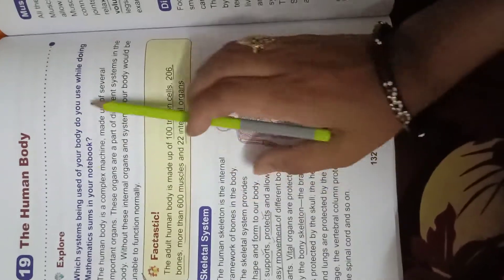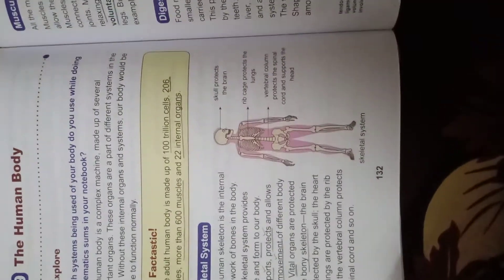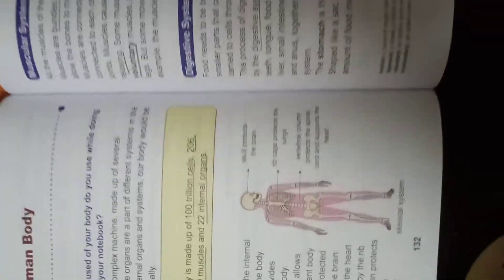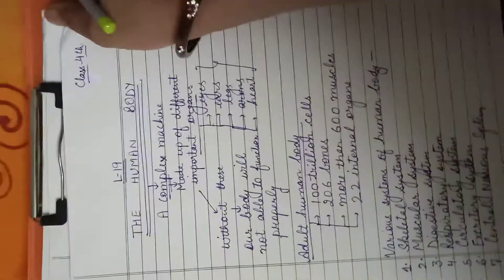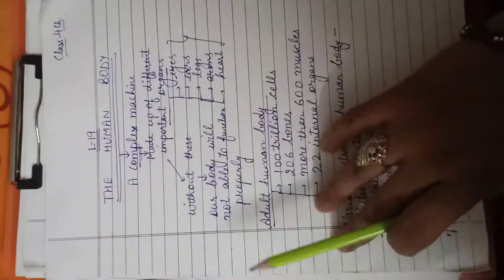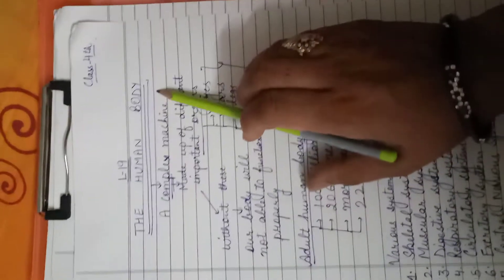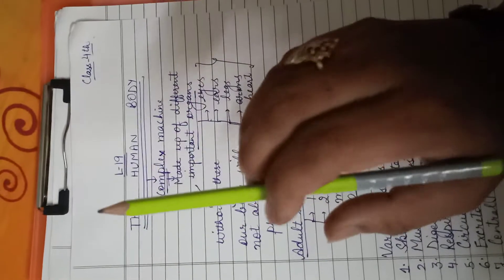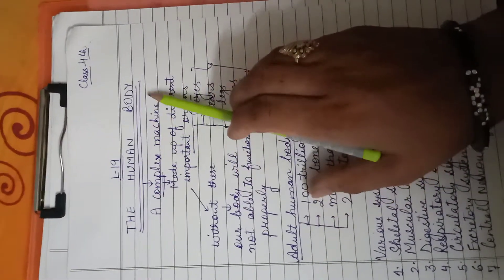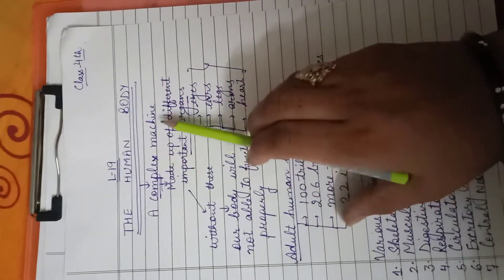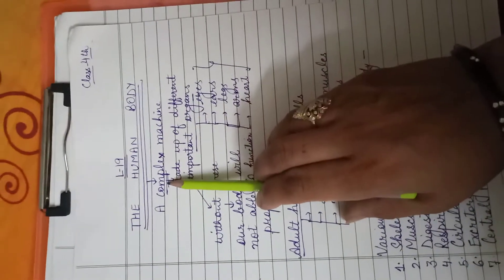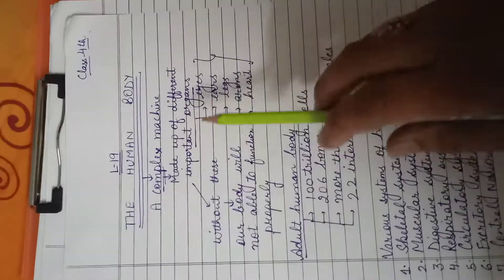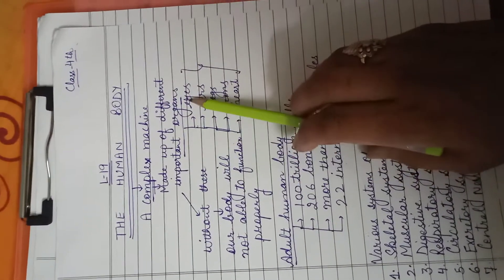So what we have read in this paragraph? Let me explain you. We have to study about the human body. We say that the human body is a complex machine. Complex means it is made up of different important organs.